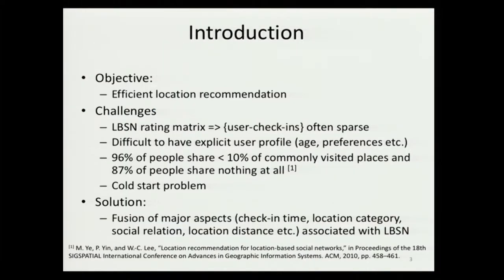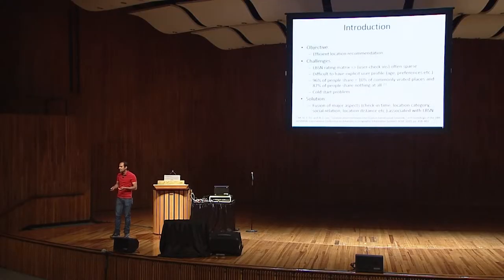The main objective of this paper is to have efficient location recommendation, and there are many challenges. For instance, the user check-in matrix is often sparse, so it's really difficult to get enough information from just the rating matrix. Also, we don't have explicit information from the user profile, because users mostly don't share their preferences. We need to get that information implicitly. Additionally, the cold start problem is always a major challenge in recommendation systems.